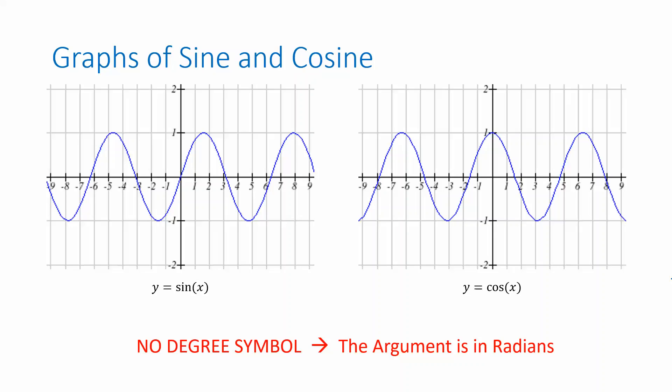Now, if there's no degree symbol, it's important to remember that the argument of the sinusoidal function is thought of as in radians. So for example, in these two graphs, we have y is sine of x radians, y is cosine of x radians, and measured in radians, these functions have a period of 2π.